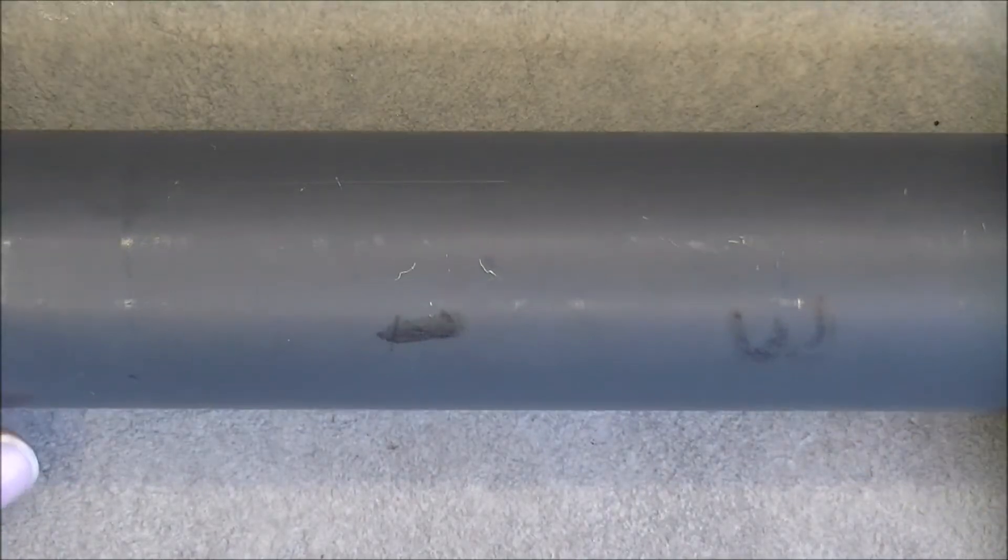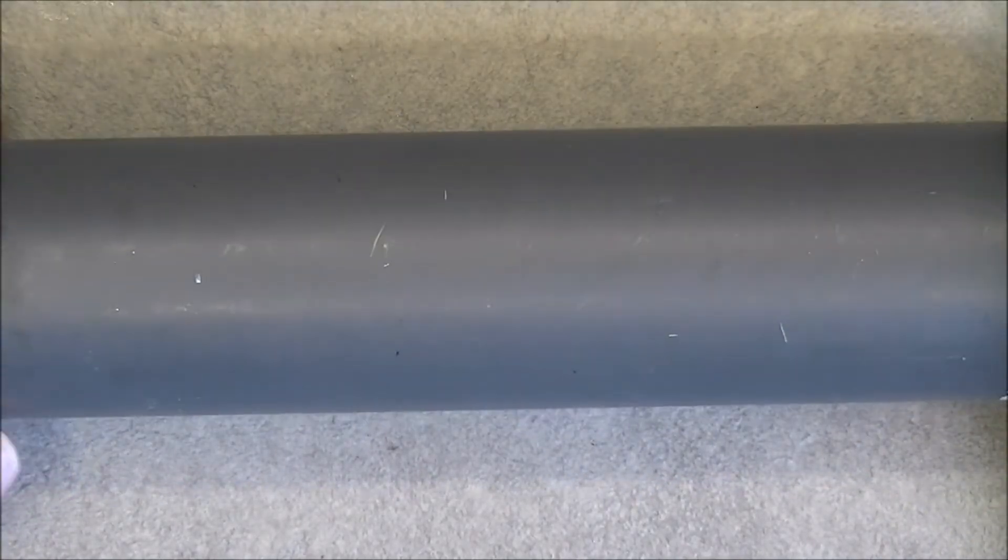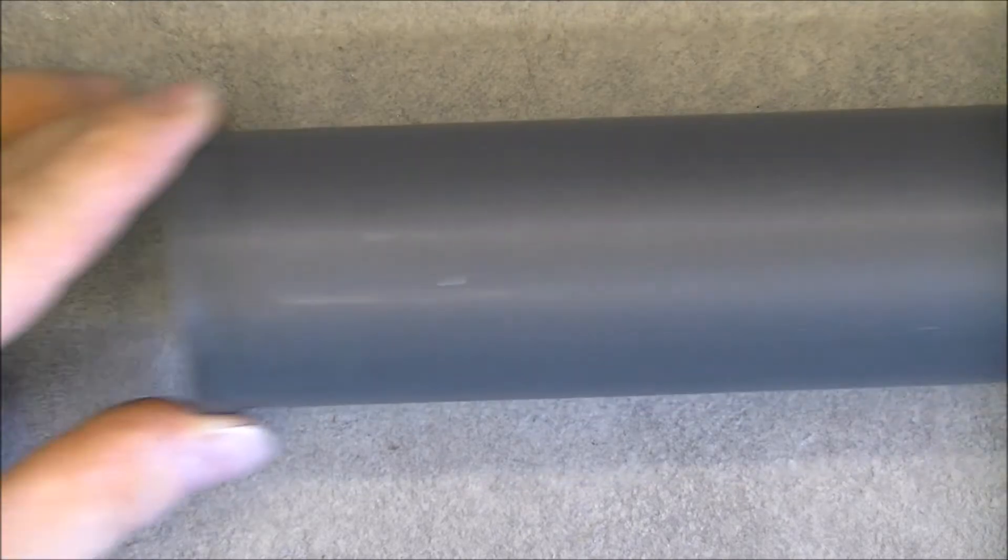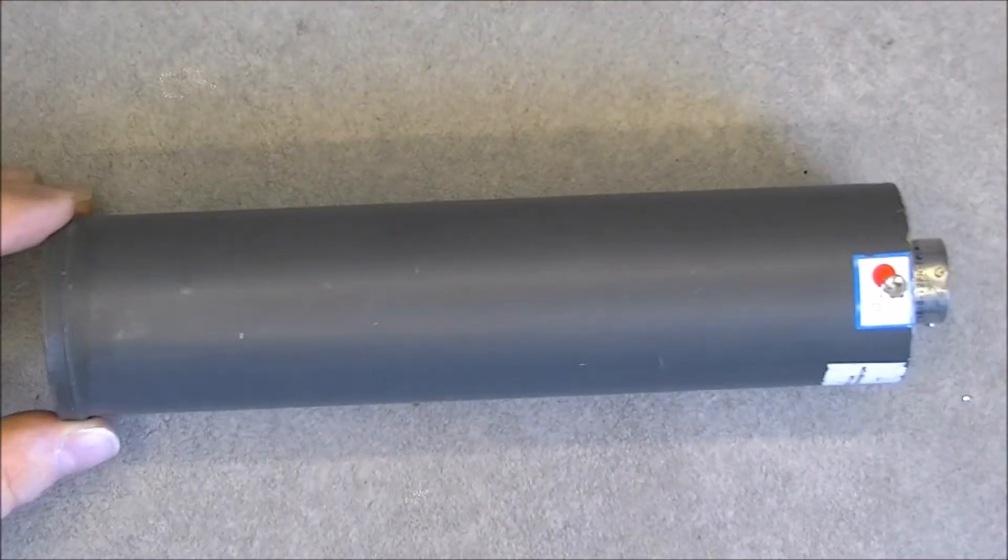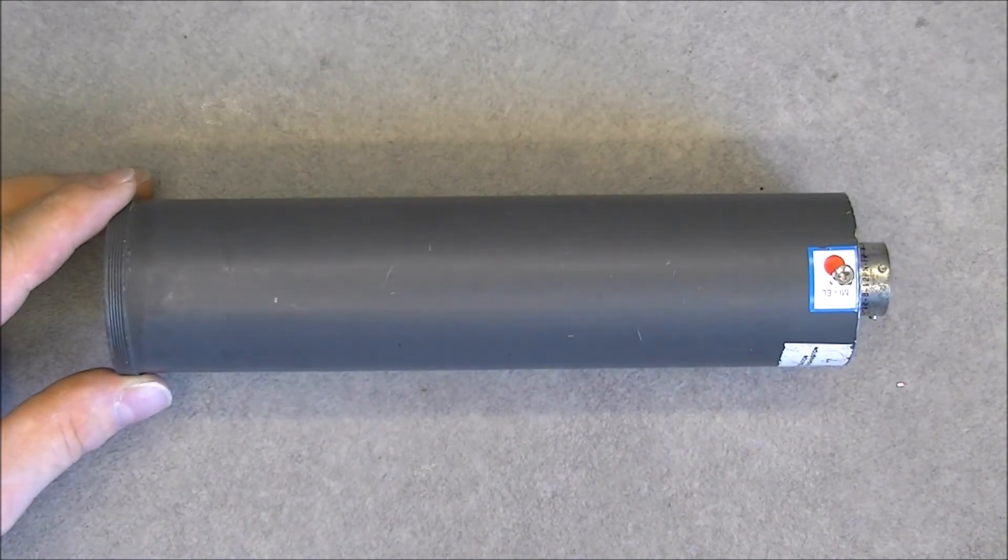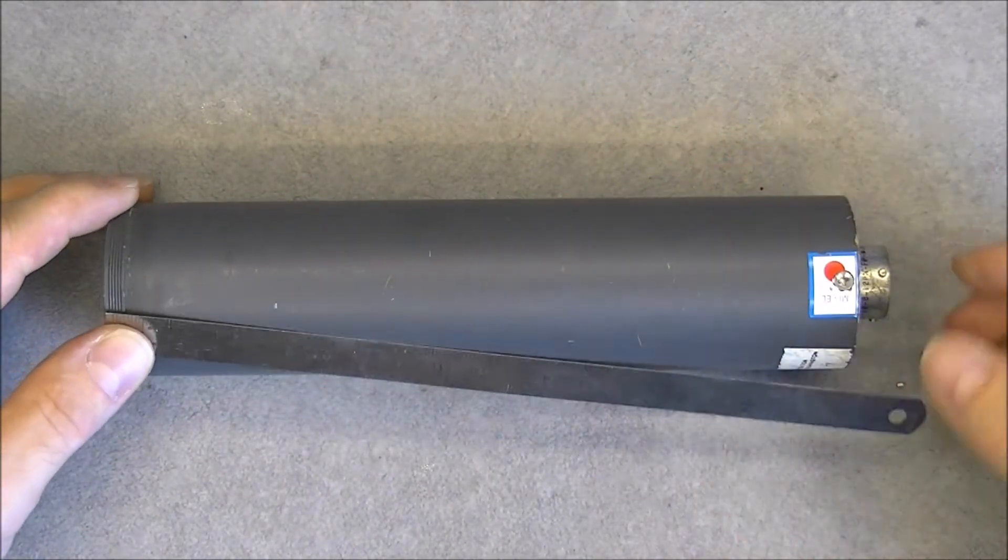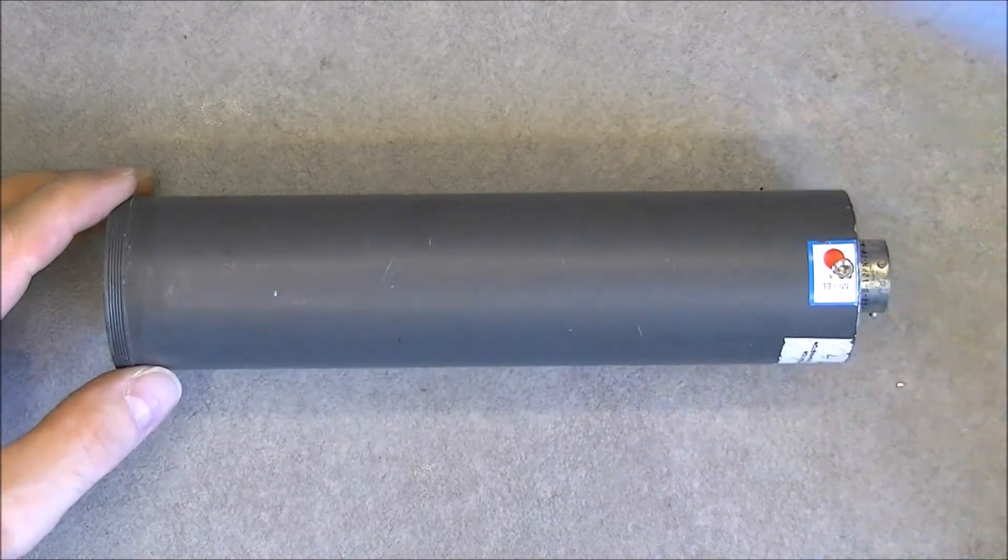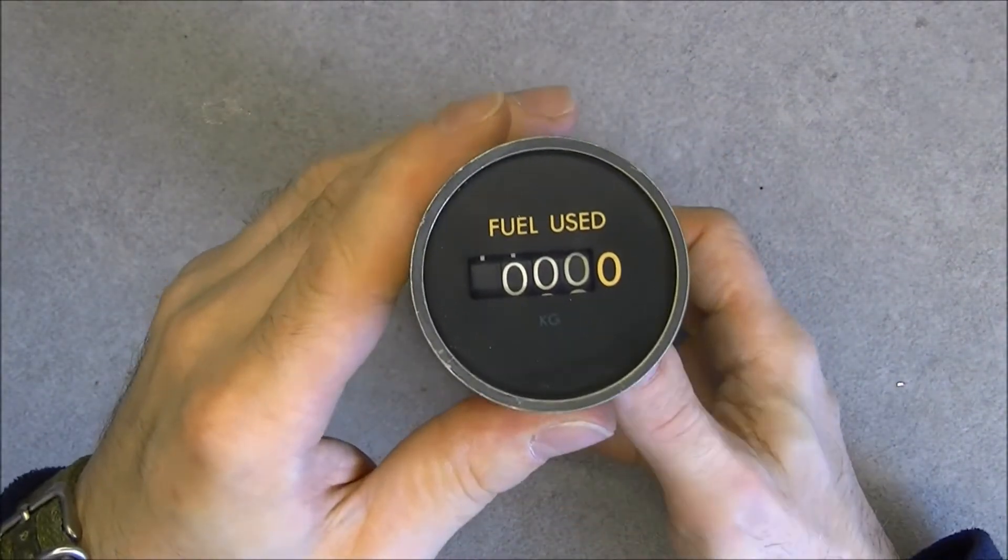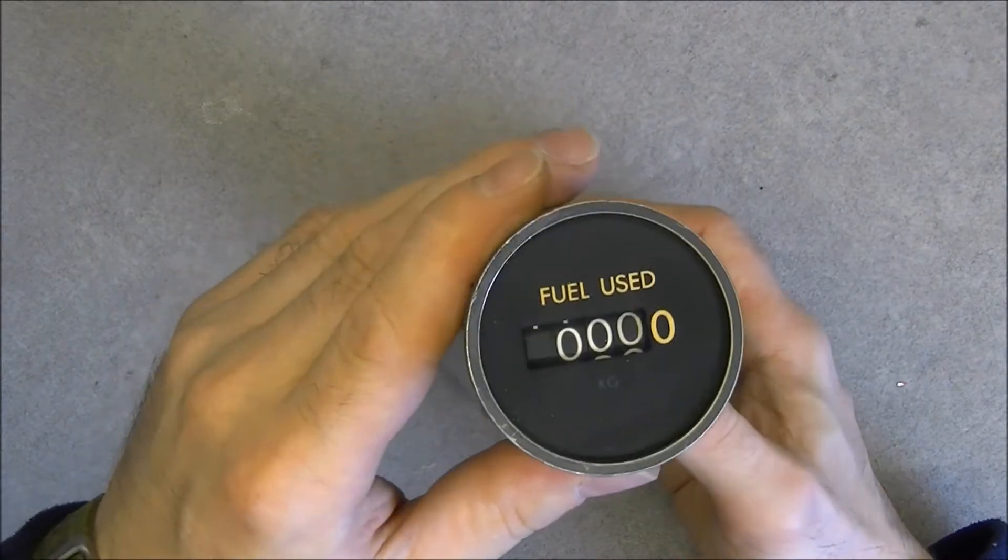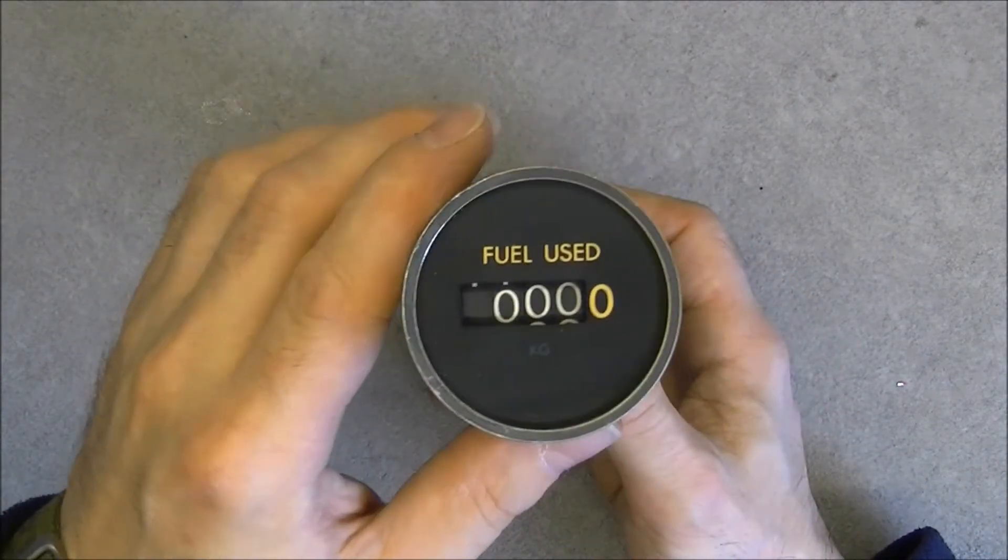Hi, for today's teardown, this. Can you guess what it is? Yes, one more airliner instrument, but this one actually is very deep compared to the diameter. It is 20 cm deep, so it is a fuel used quantity indicator in kilograms, which is quite unusual.